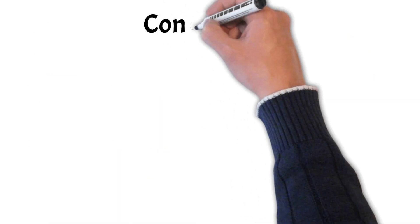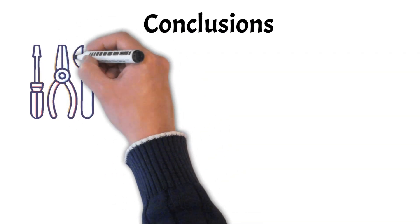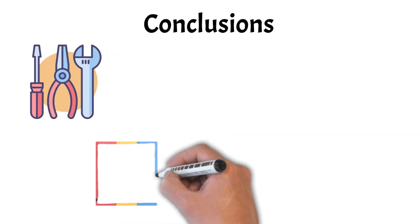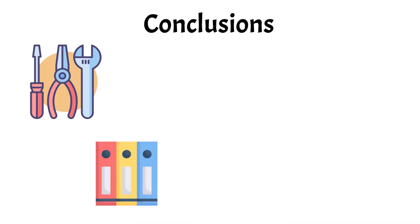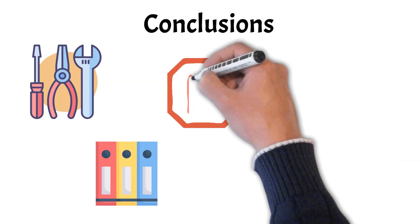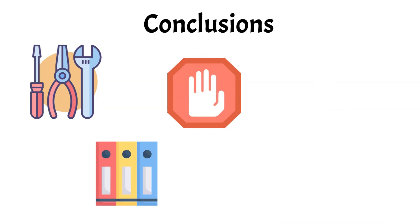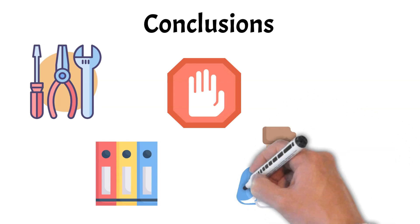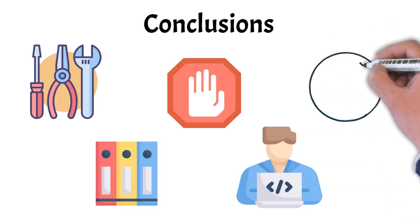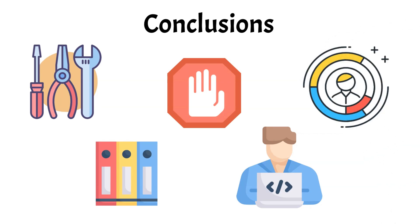In conclusion, pointers are a fundamental tool in programming that offer powerful capabilities for memory management and data manipulation. By understanding how to use pointers effectively, such as initializing them properly, avoiding common pitfalls like memory leaks and dangling pointers, and utilizing pointer arithmetic, you can write more efficient and flexible code. Mastering pointers requires careful attention to detail, but the control and performance benefits they provide make them an essential skill for any programmer.